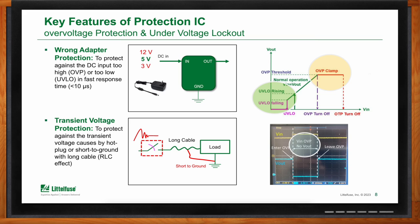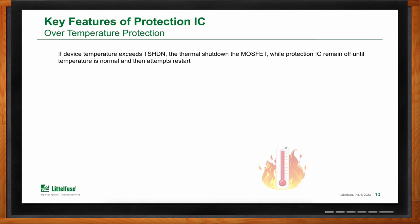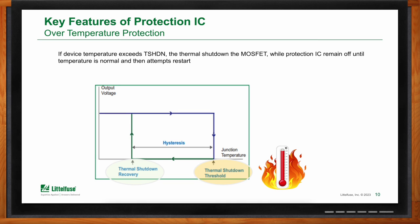Overtemperature can also cause a lot of problems. The protection IC incorporates a temperature sensor internally — actually it's the die itself — that is monitoring temperature. Once you exceed that temperature, depending on the protection IC, it will either try to limit the current or it may shut down immediately. Generally, if you exceed about 140 degrees, the protection IC will shut down, wait for a cool-down of about 20 degrees lower, and then attempt to restart.